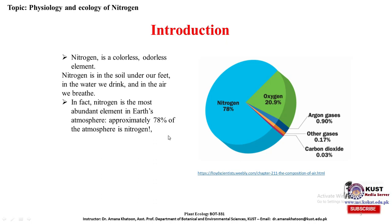If we consider the whole globe as a sphere, about 78% of the atmosphere is nitrogen, while the remaining 22% includes oxygen, carbon dioxide, and various other gases. So nitrogen is present as the most abundant element at 78%.